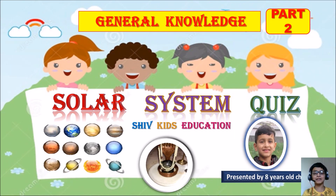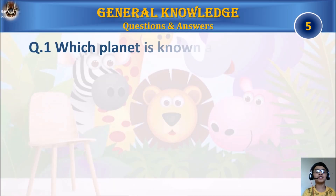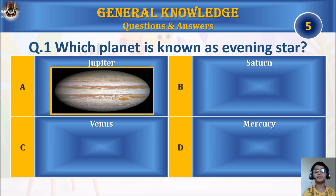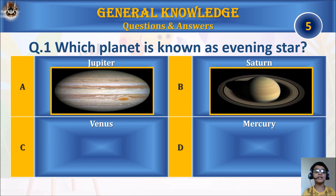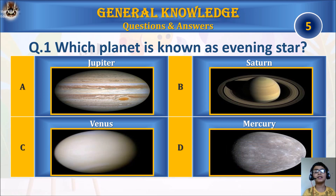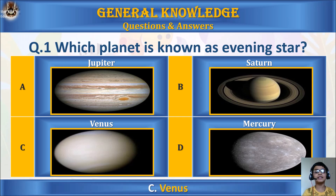Hi friends, my name is Arush and welcome to my channel Shift Kids Education. Today we are going to learn solar system quiz part 2. Question 1: Which planet is known as evening star? A. Jupiter, B. Saturn, C. Venus, or D. Mercury? Your time starts. The answer is C. Venus.